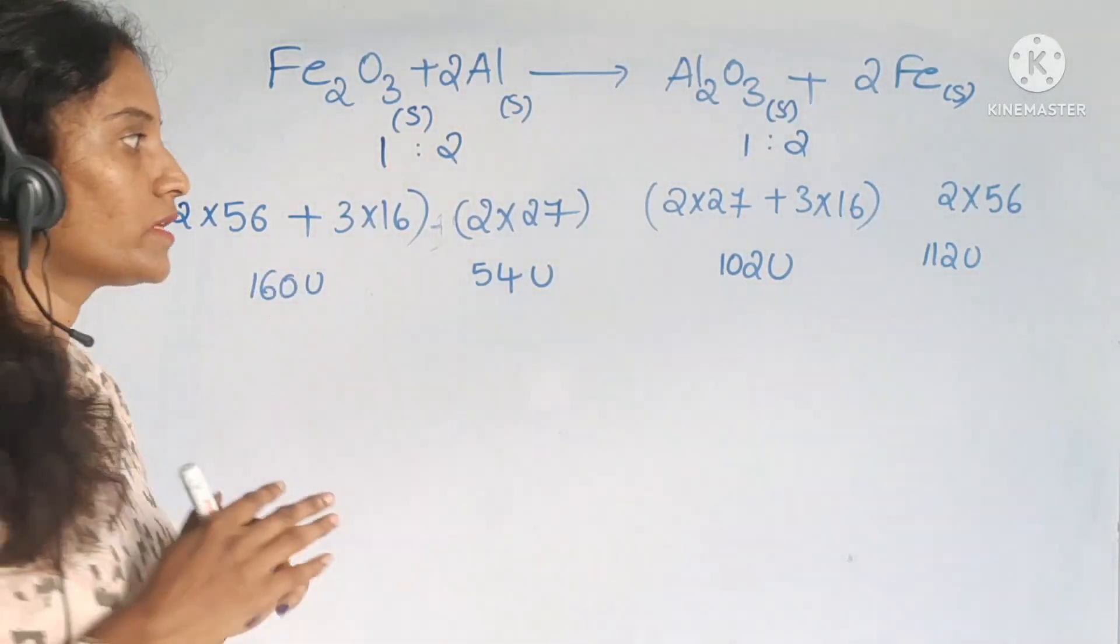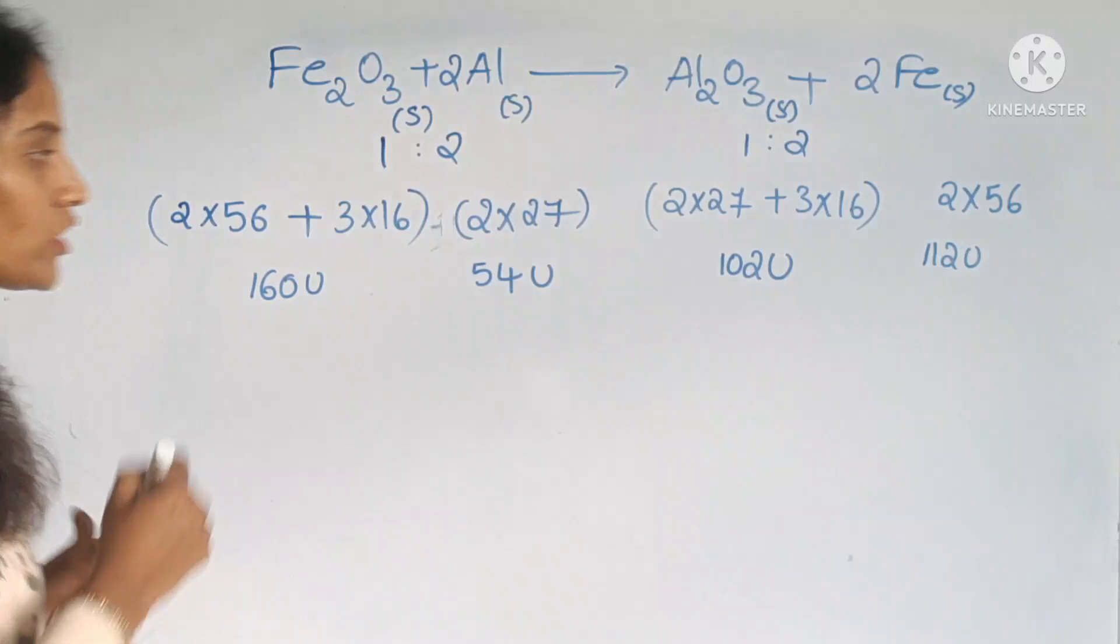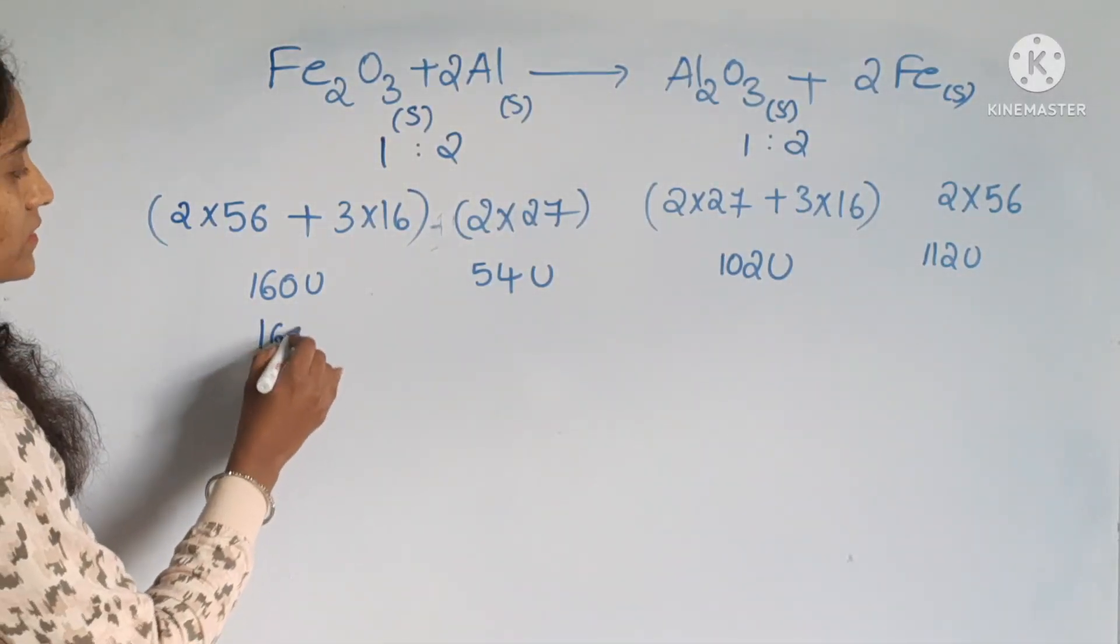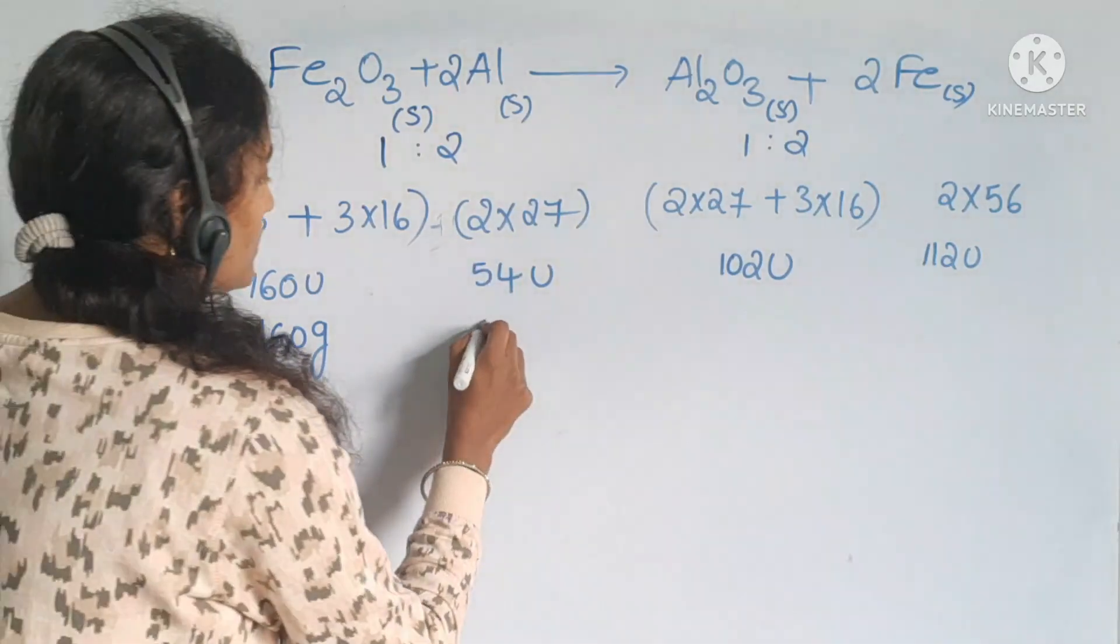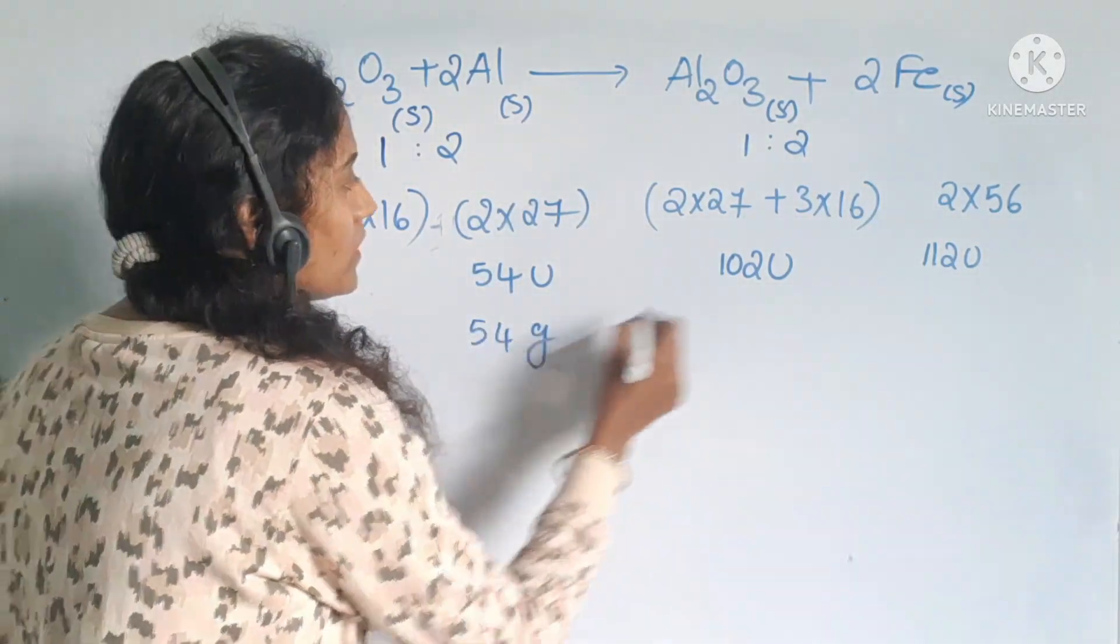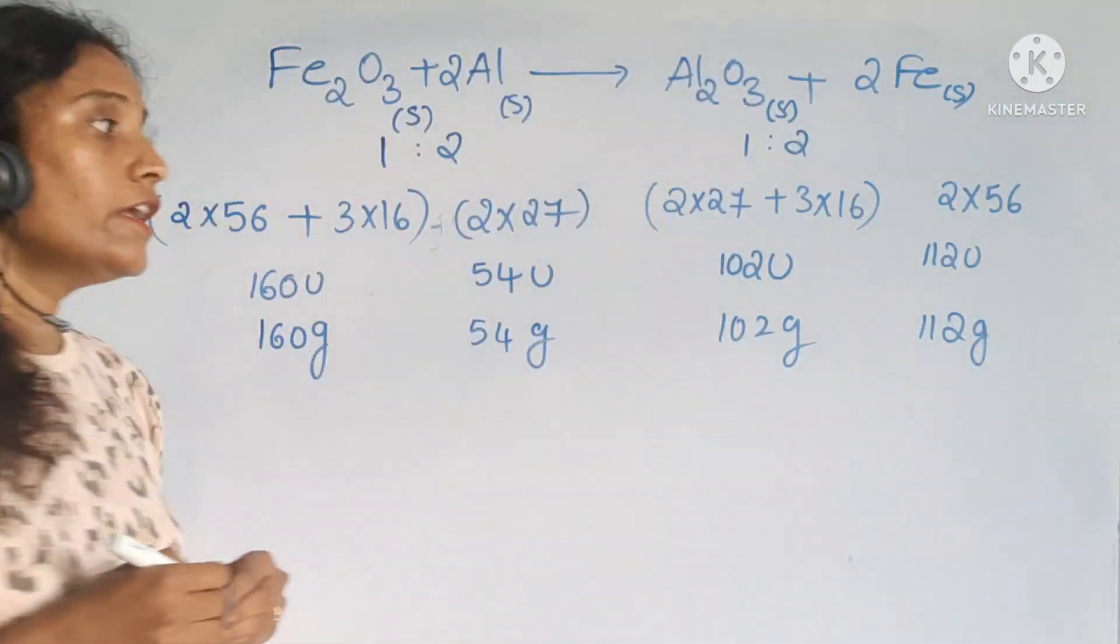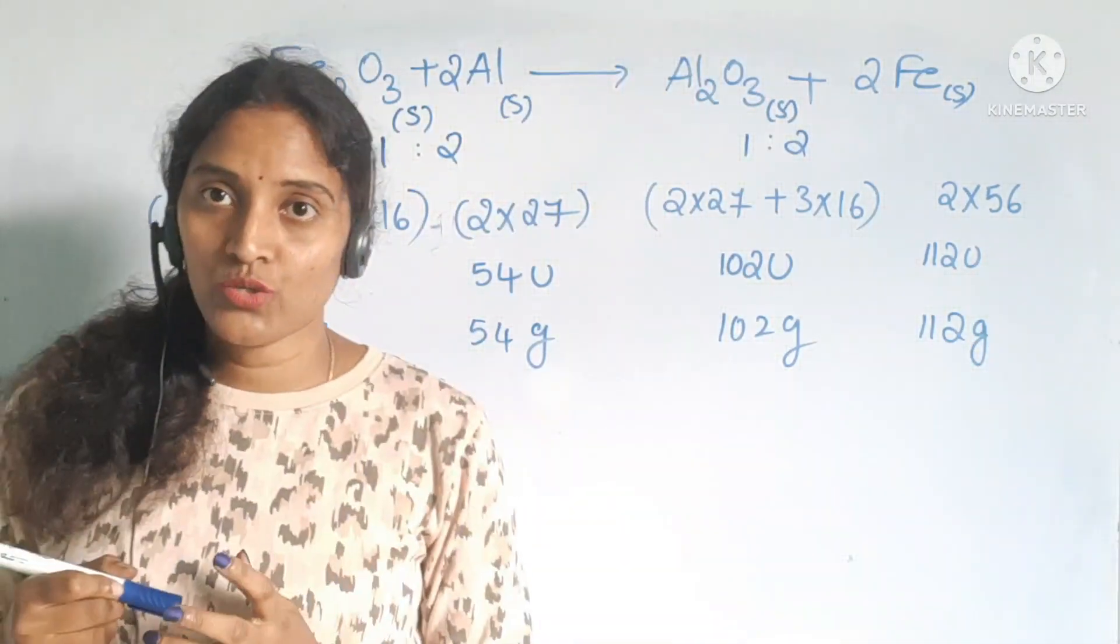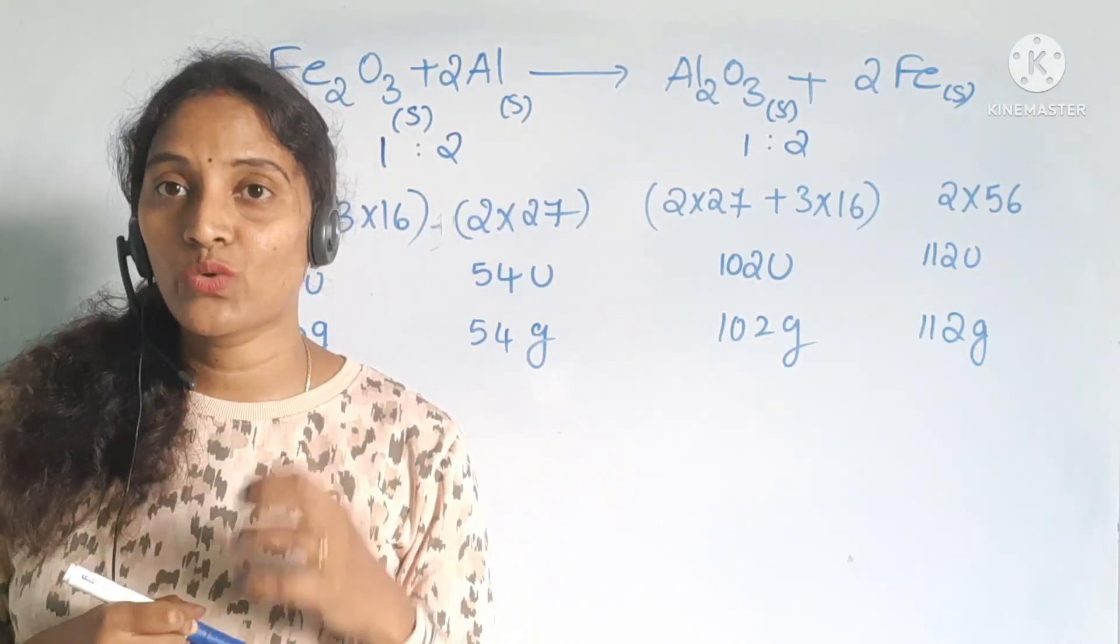Now you can write it into gram molecular mass or gram atomic mass: 160 grams of Fe2O3 and 54 grams and 102 grams, 112 grams.